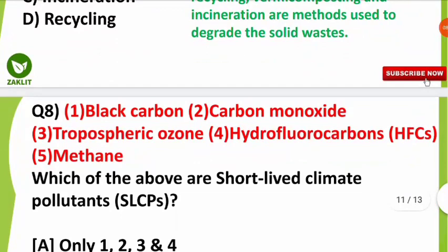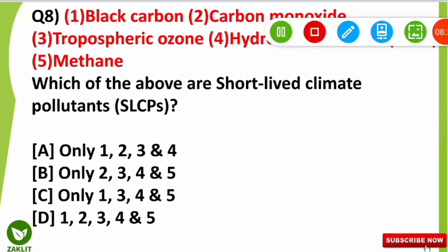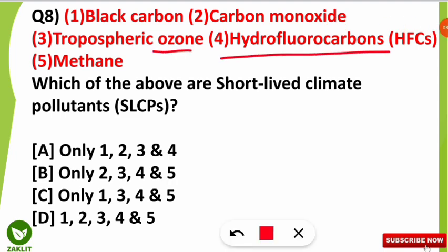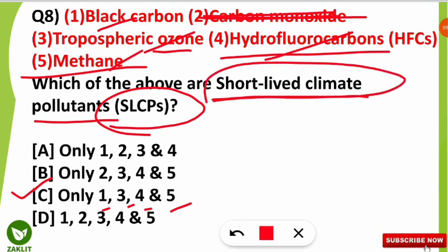The eighth question gave five compounds: black carbon, carbon monoxide, tropospheric ozone, hydrofluorocarbons, and methane. You had to identify which are short-lived climate pollutants, denoted as SLCPs. The correct option is option C — statements one, three, four, and five — meaning all except carbon monoxide. So black carbon, tropospheric ozone, hydrofluorocarbons, and methane are known as short-lived climate pollutants.